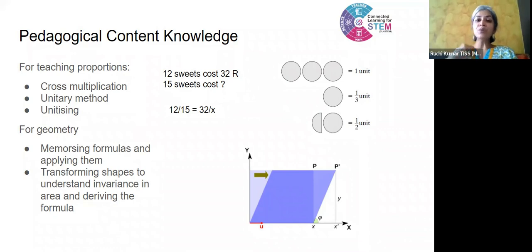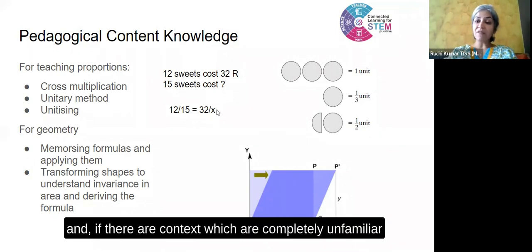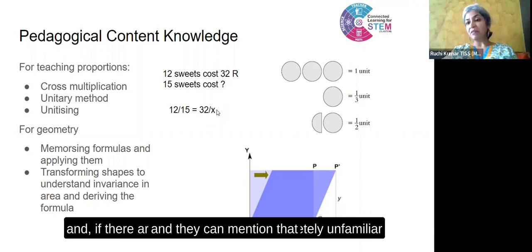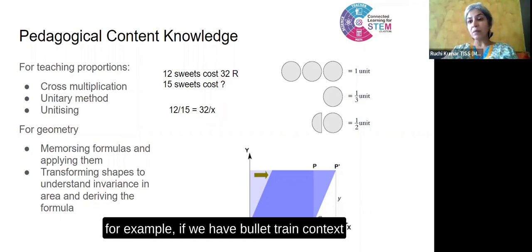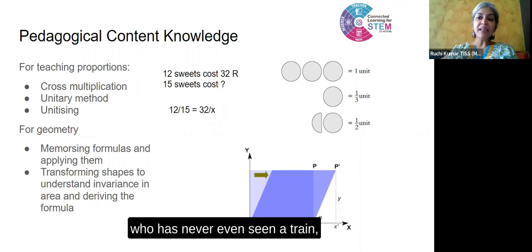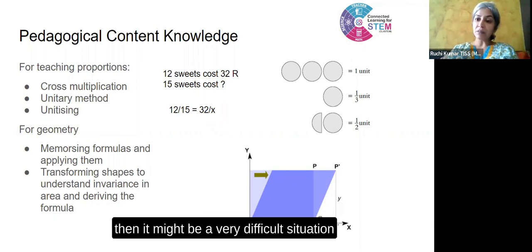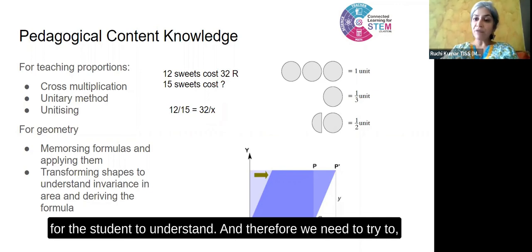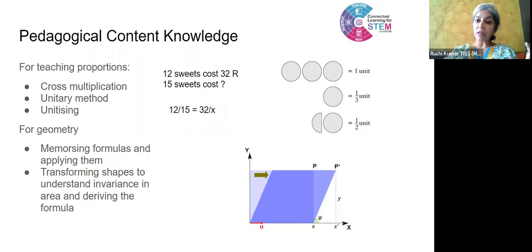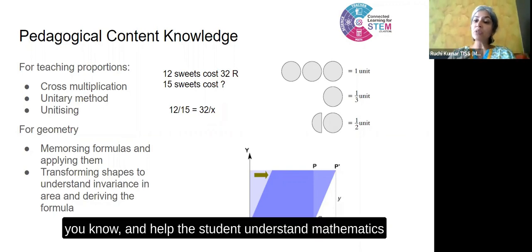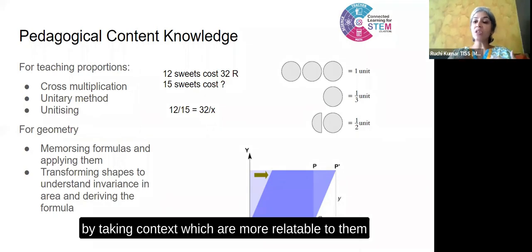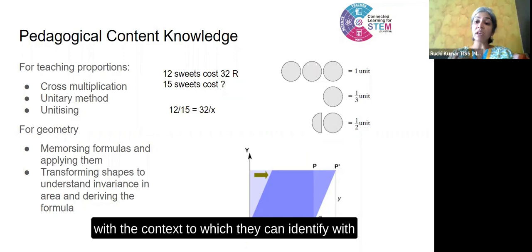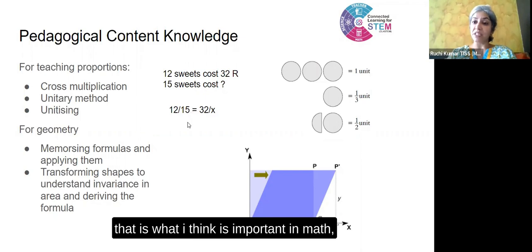These things help students to relate mathematics with their daily life. If there are contexts which are completely unfamiliar — for example, if we have a bullet train context where we are talking to a rural child who has never even seen a train — then it might be a very difficult situation for the student to understand. Therefore, we need to help the student understand mathematics by taking contexts which are more relatable to them, contexts through which they can identify. That is what I think is important in mathematics teaching.